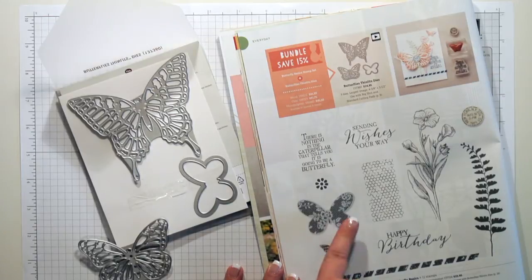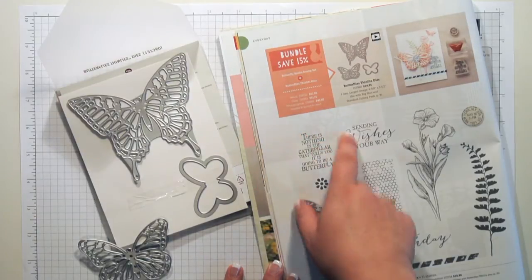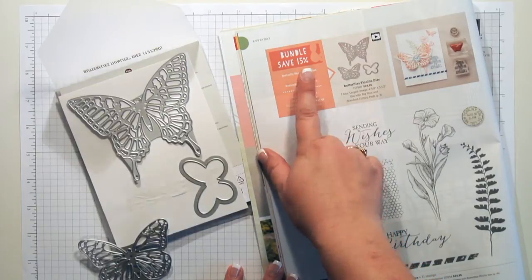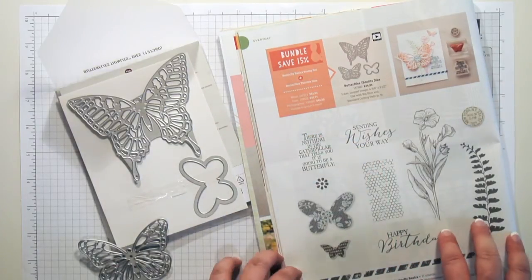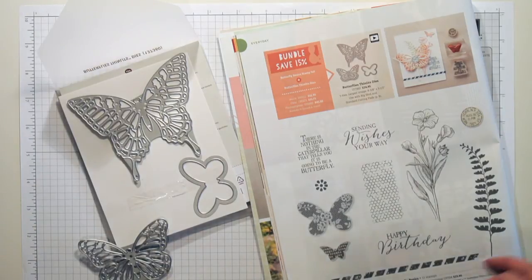If you see this stamp image here of this butterfly, it coordinates with the butterfly in the thinlit package. So that's really great for stamping and then cutting. You don't have to use your scissors, no cutting or fussy cutting. What's also great is if you choose to get the set, the thinlit dies and the stamp set, you can bundle it and save 15%.